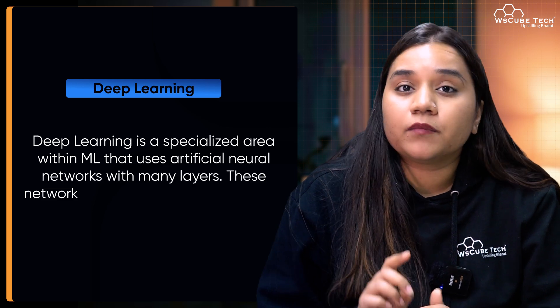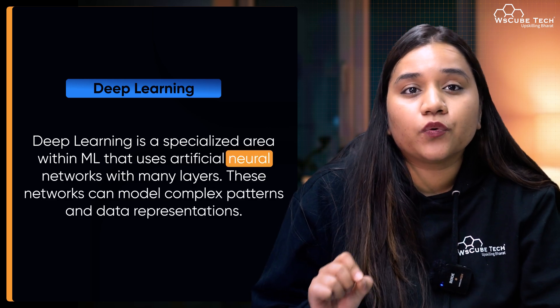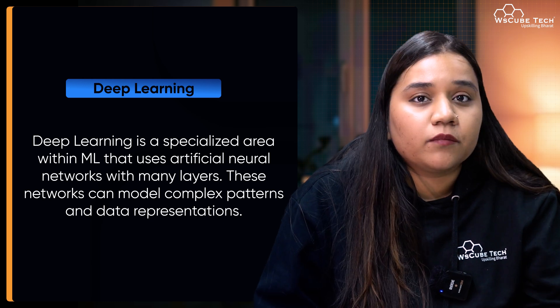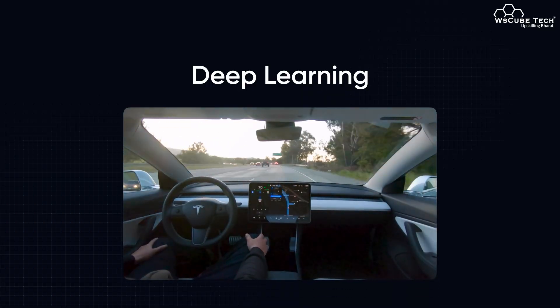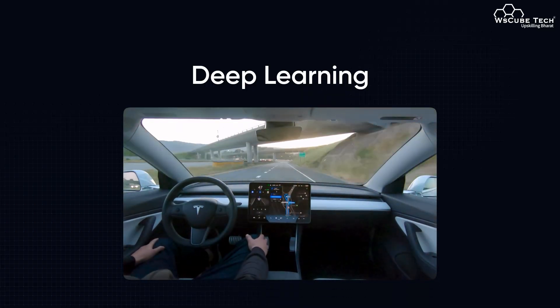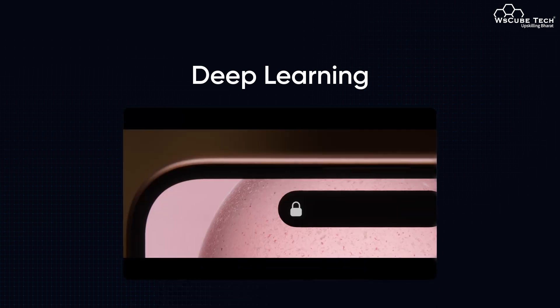Next we have deep learning. Deep learning is a specialized area within machine learning that uses artificial neural networks with many layers. These networks can model complex patterns and data representations. Examples include self-driving cars that use deep learning for image recognition to identify pedestrians, traffic signs, and obstacles. Similarly, facial recognition on our mobile phones relies on deep learning techniques. While all deep learning is machine learning, not all machine learning uses deep learning. Deep learning is particularly powerful for handling large amounts of unstructured data like images, audio, and text.